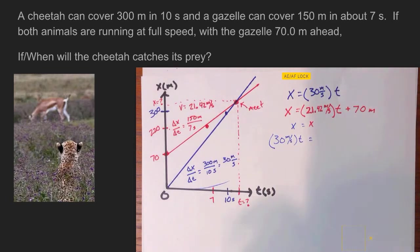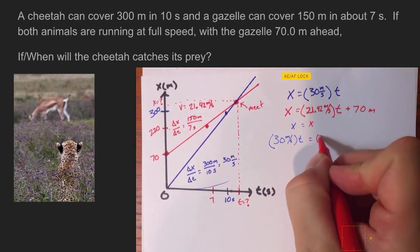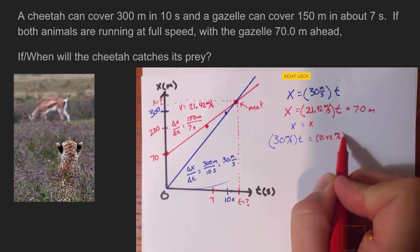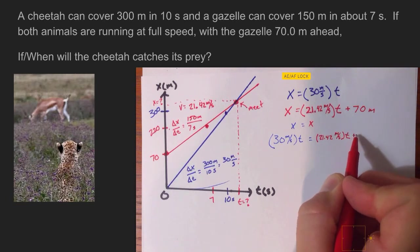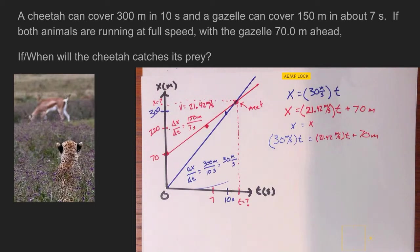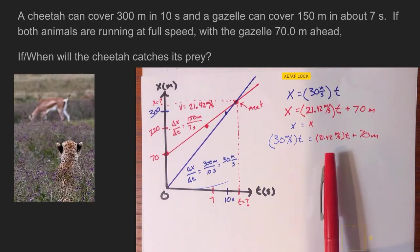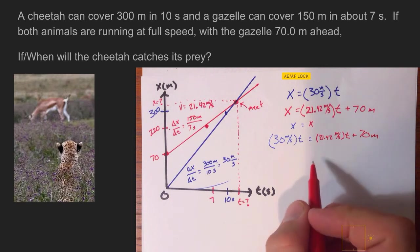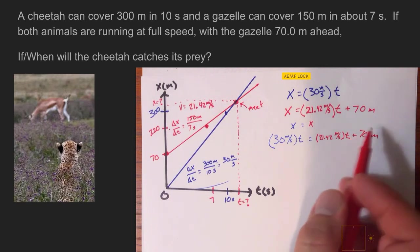So if we set the two equations equal to each other, you would get something that looks as follows. Instead of using x for the blue x, I'm going to write 30 meters per second multiplied by time is going to be equal to 21.42 meters per second times time plus the 70 meters. Now we have an equation. We've got to start simplifying this a little bit. Here's the easiest way to do it. We're just going to do a little bit of algebra.